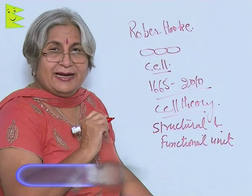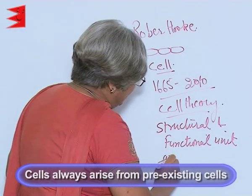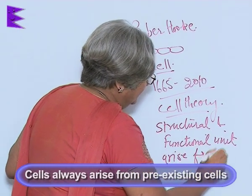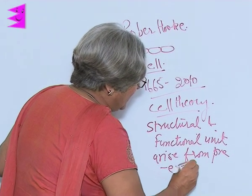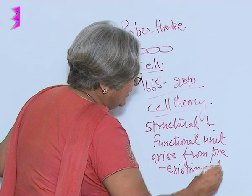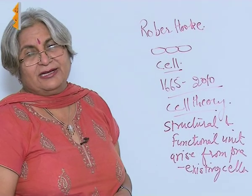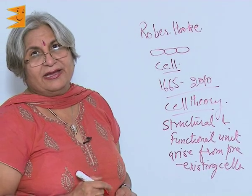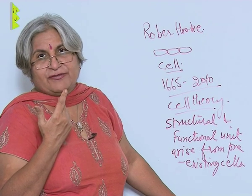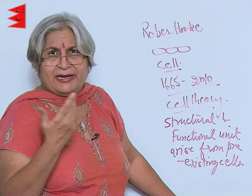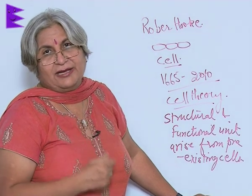We also learnt that cells always arise from pre-existing cells, which means they cannot come from nothing or de novo. And in the twentieth century we also added that cells have genetic material or hereditary information. So this is regarding the history of the cell — scientists like McKenzie, Robert Brown, and Leeuwenhoek have all contributed to the understanding of the cell.